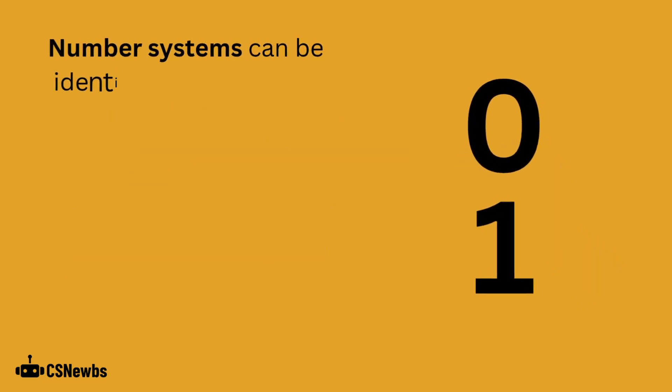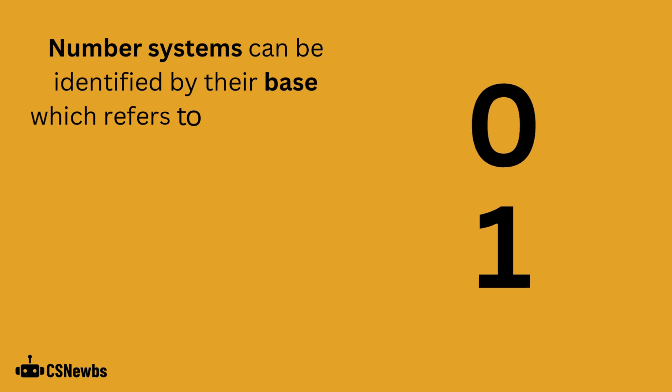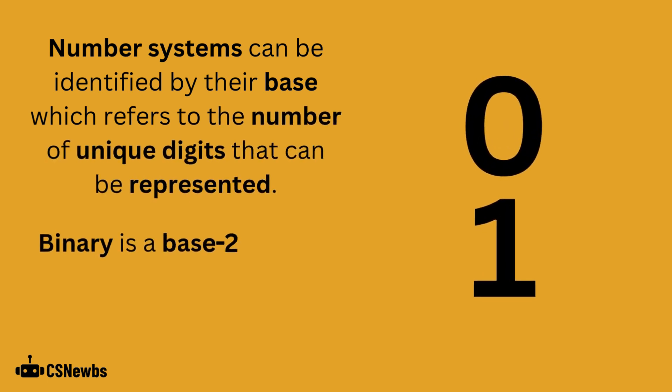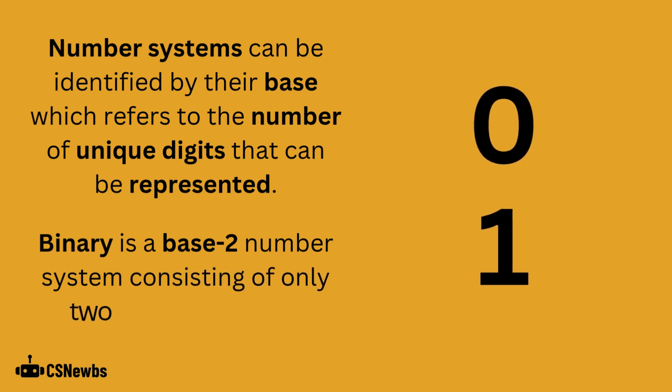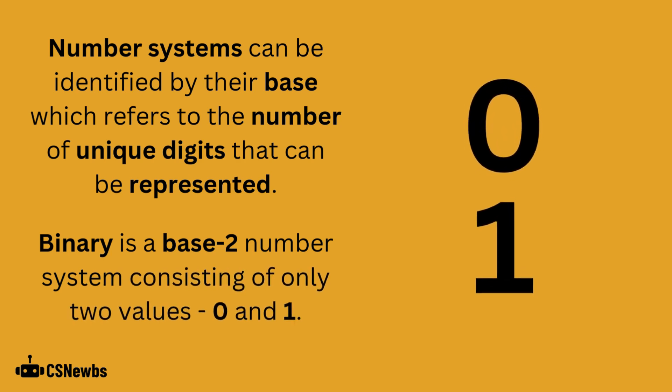Number systems can be identified by their base, which refers to the number of unique digits that can be represented. Binary is a base 2 number system consisting of only two values, 0 and 1.